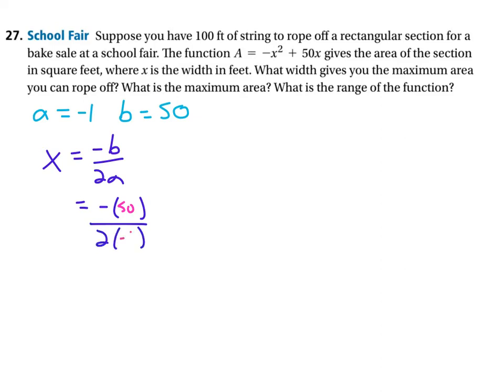and what's A? Negative 1. So negative 50 over negative 2 means positive 25. So we've got an axis of symmetry at x equals 25.